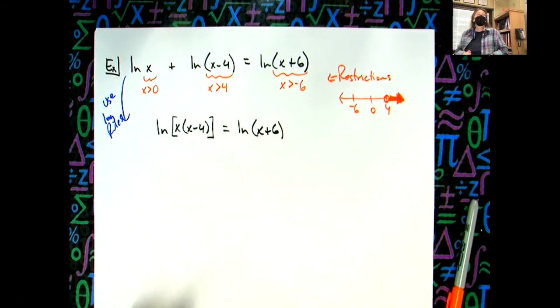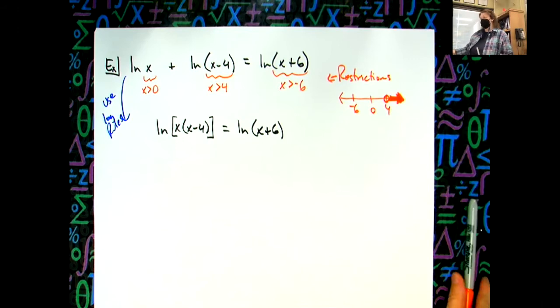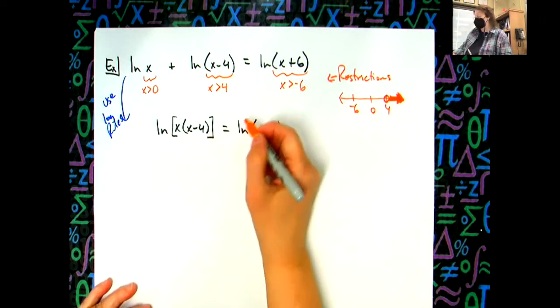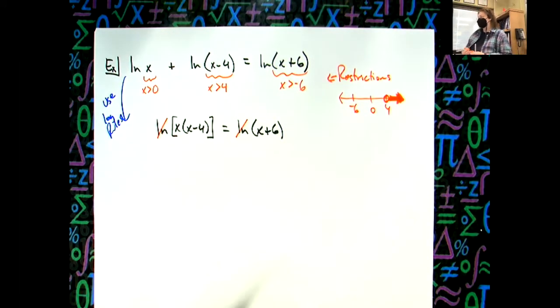Now I've got a log on both sides of the equation with the same base. So I've got one more thing I can do - I can cross out the logs. Next step.